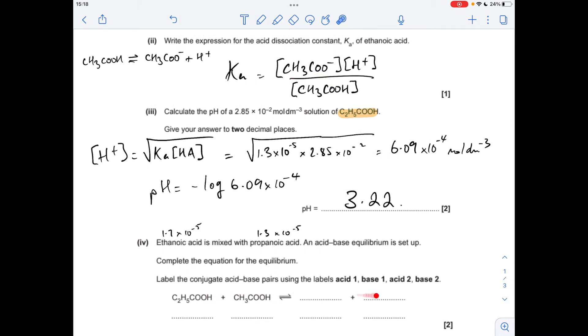Next one, we've got to complete this equation for the equilibrium between propanoic and ethanoic acids, and then label up the conjugate acid-base pairs. I've written the Ka values above the two acids, so we need that to establish which is the stronger acid of the two. The higher the Ka value, the more dissociated it is, therefore it's the stronger acid. You can see that ethanoic acid is the stronger acid with its higher Ka value, so it's going to donate its proton to the propanoic acid.